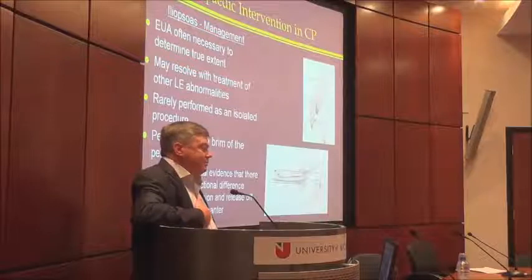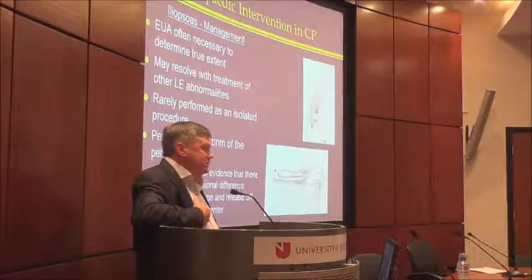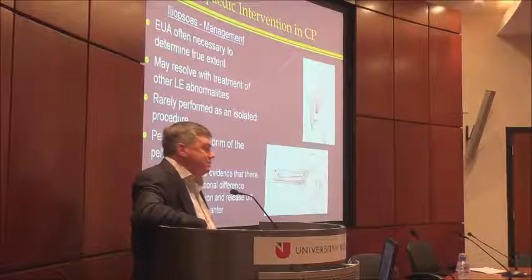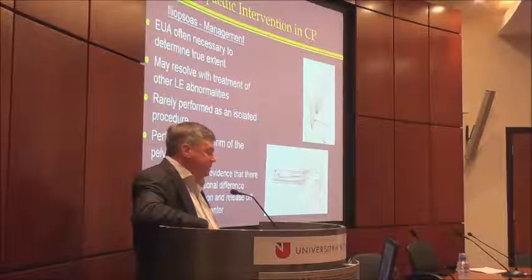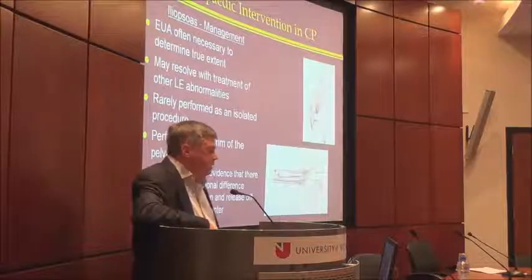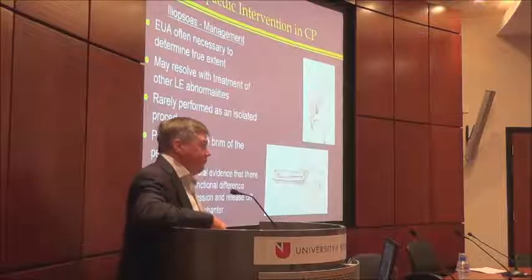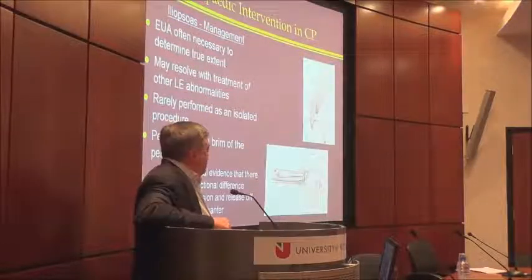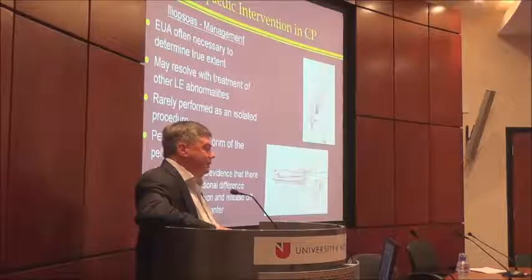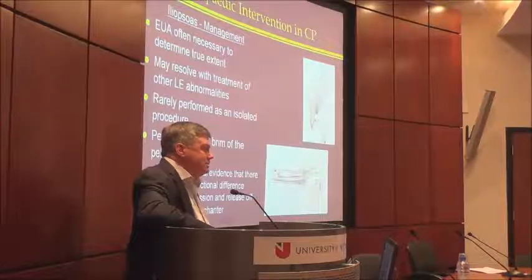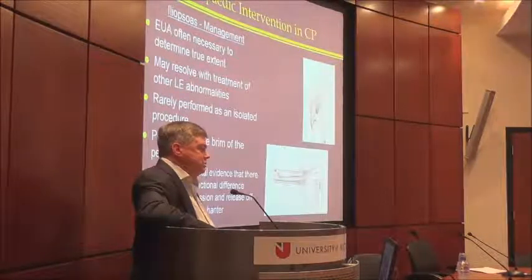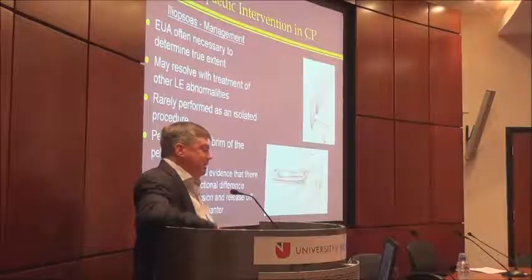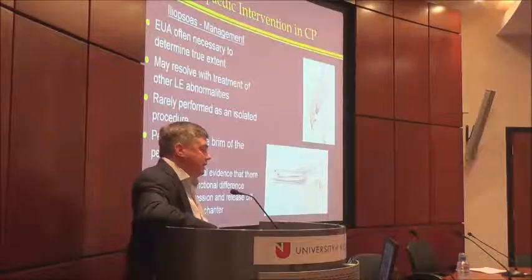When I schedule these kids for surgery, it's always a possible iliopsoas release — I want to examine them under anesthesia first. As soon as the tube is taped, I do a Thomas test on the table to confirm the contracture is fixed. It's traditionally done at the brim of the pelvis, which requires finding and retracting the femoral neurovascular bundle. There are small studies showing that releasing it off the lesser trochanter through a groin incision works just as well.